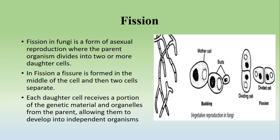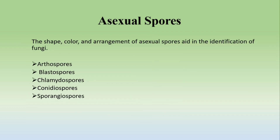The second method of asexual reproduction is fission. In fungi, fission is a form of asexual reproduction where the parent organism divides into two or more daughter cells. A fissure forms in the parent cell, the nucleus divides, then cytoplasmic division occurs, and the cell constricts to produce daughter cells. Each daughter cell receives a portion of genetic material and organelles from the parent and will be the same as the parent cell.